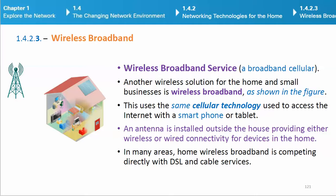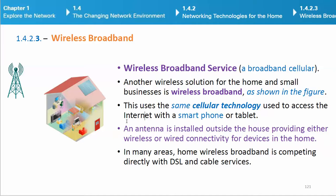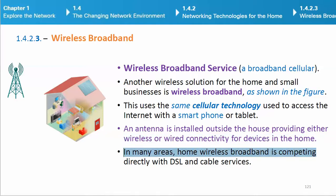Another wireless solution for the home and small businesses is wireless broadband service, which uses the same cellular technology used to access the Internet with a smartphone or tablet. An antenna is installed outside the house providing either wireless or wired connectivity for devices in the home. In many areas, home wireless broadband is competing directly with DSL and cable services.